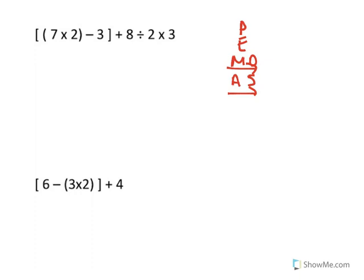We're going to start with seven times two, so underline seven times two. What's seven times two? Fourteen. Now I'm going to copy everything that's not underlined. I don't have to copy the regular parentheses because I've already done everything inside them.